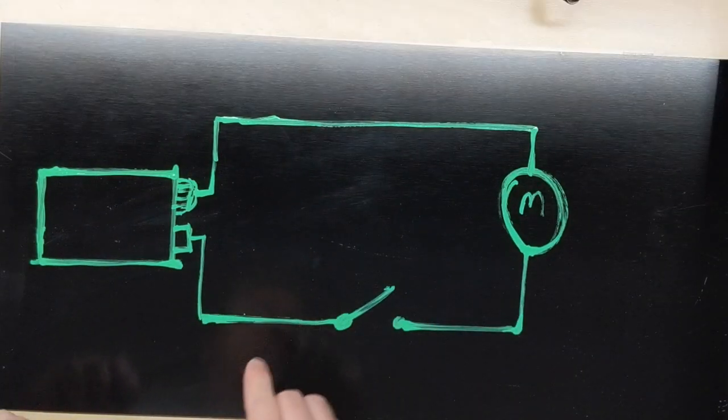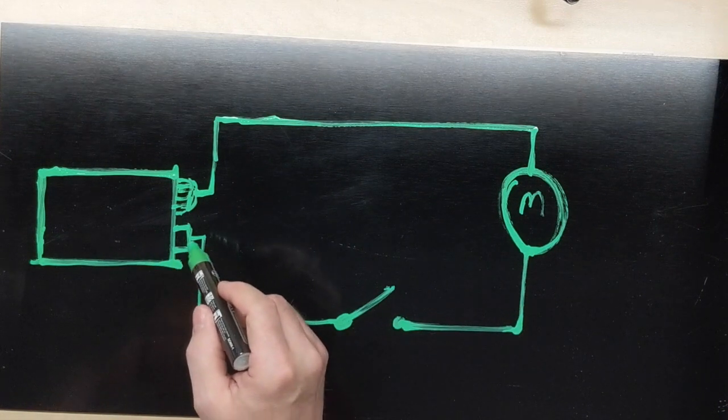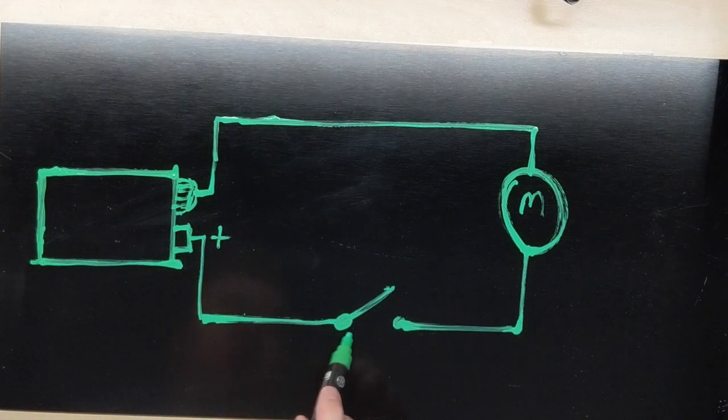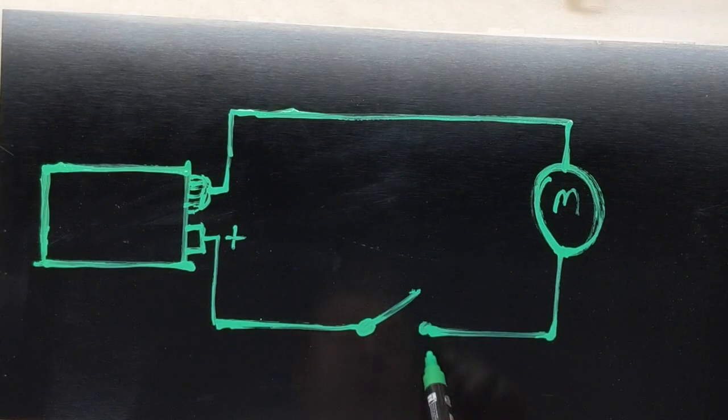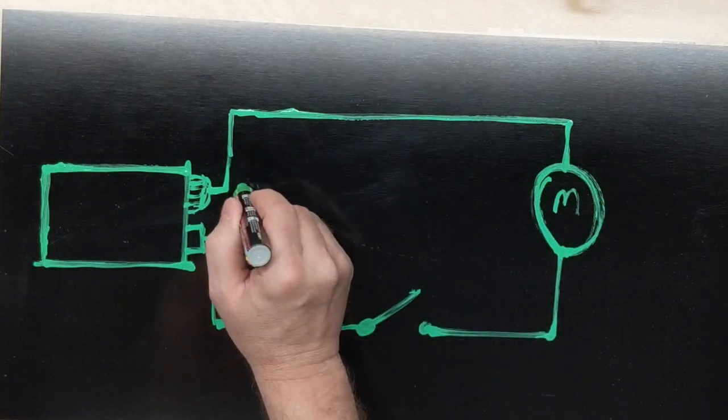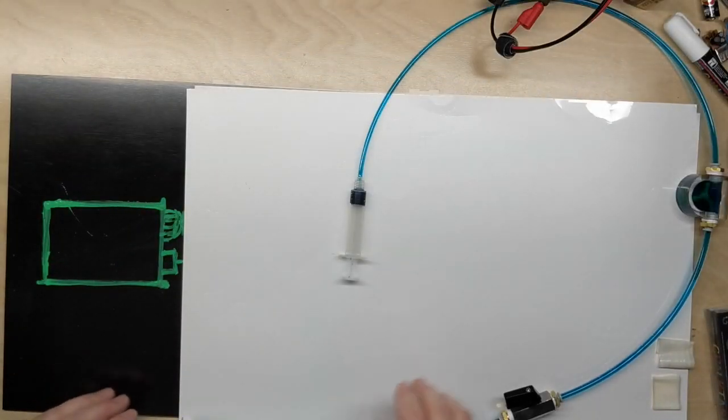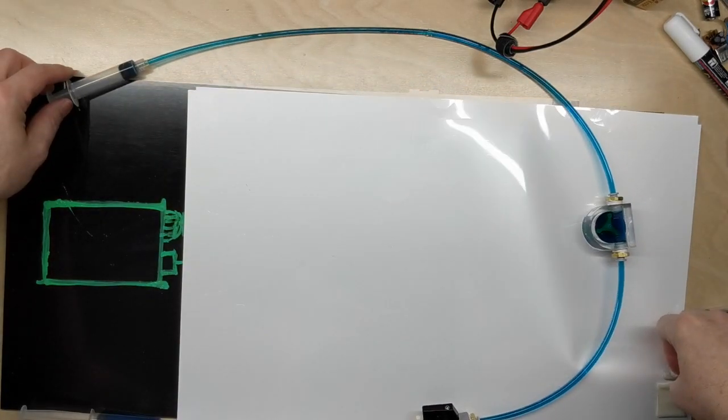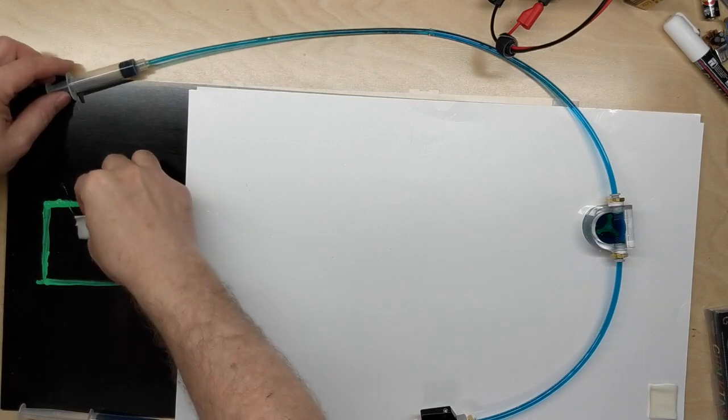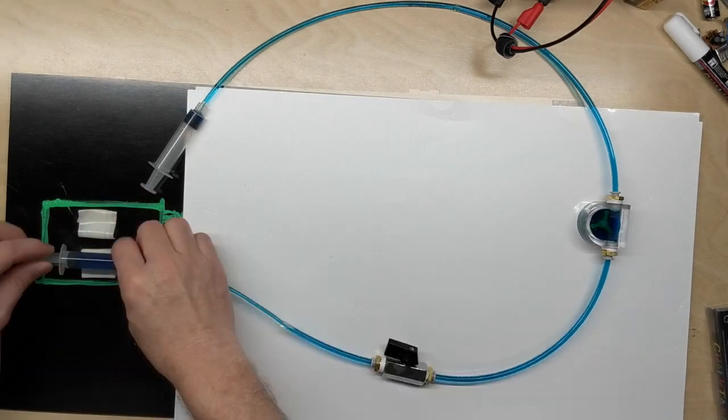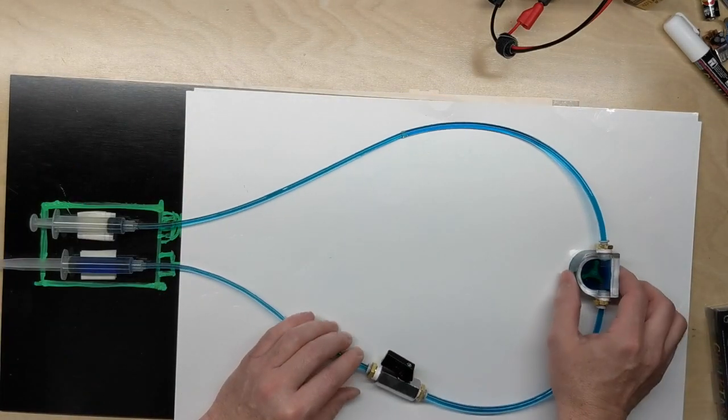So now we have a diagram showing our 9-volt battery, which the positive was going to our switch. Going through the switch, it would go through the switch and go through the motor and back to the negative terminal. Keeping the electrical circuit in mind, I now want to bring over the hydraulic analogy. I'm going to try to use some double-faced tape to keep these syringes in place.